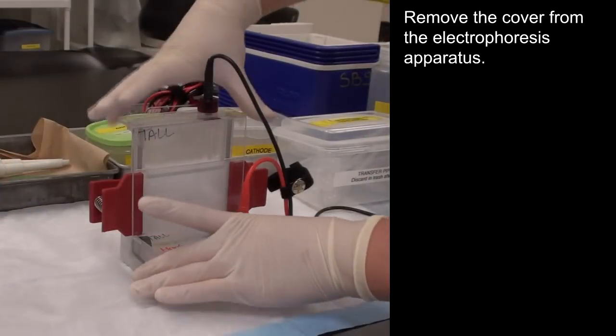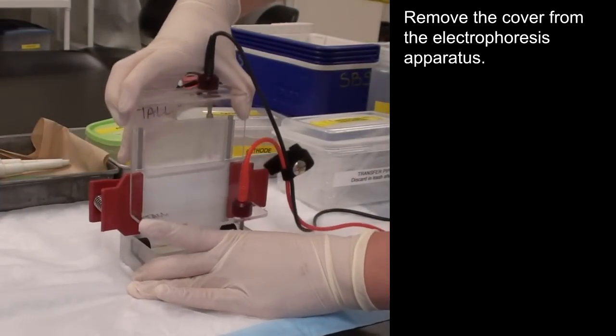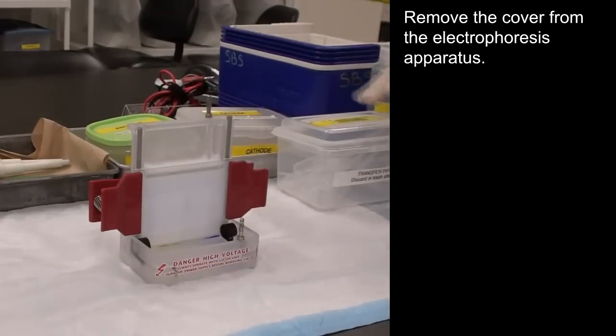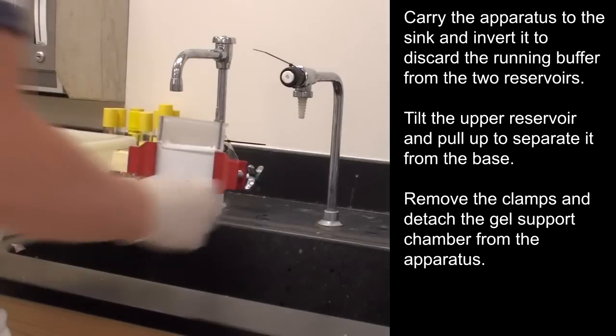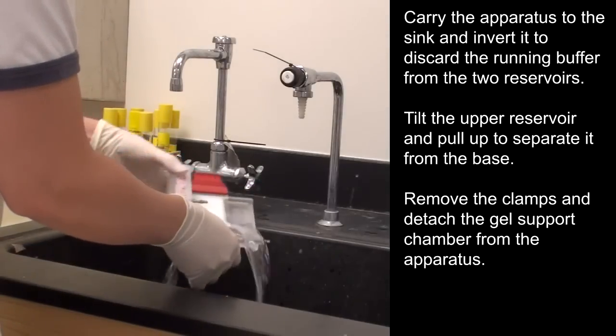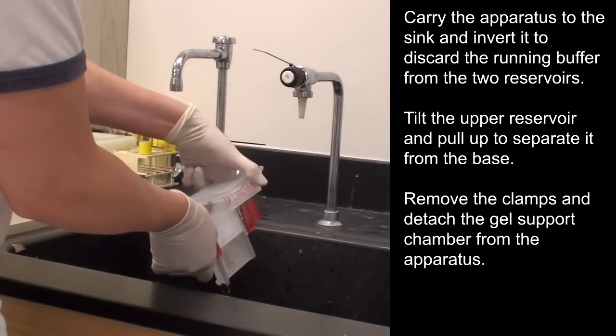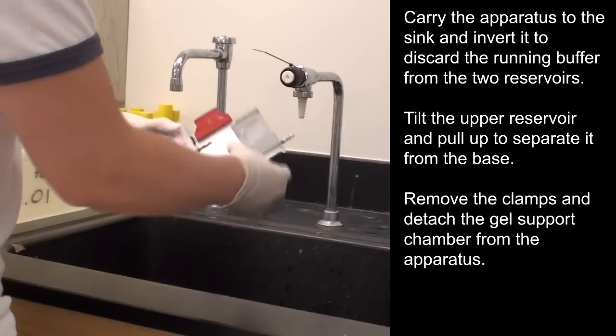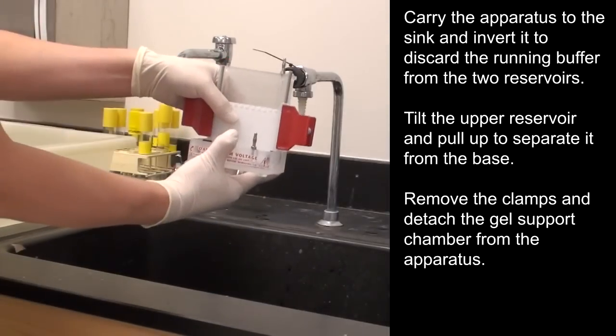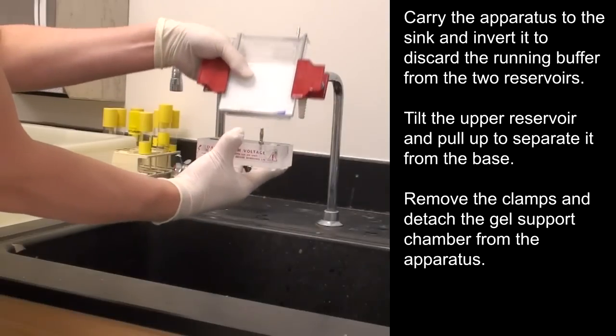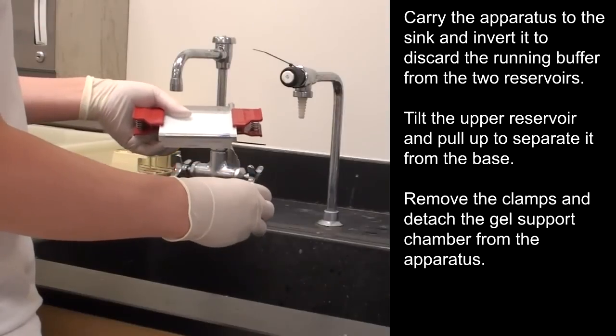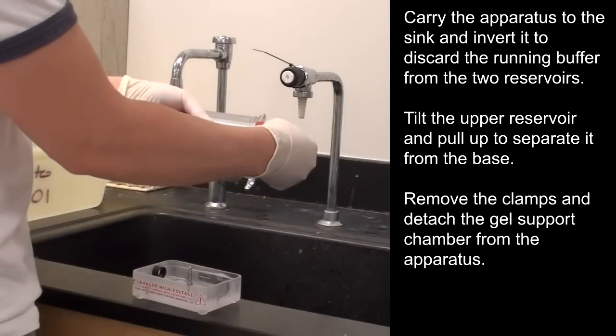Remove the cover from the electrophoresis apparatus. Carry the apparatus to the sink and invert it to discard the running buffer from the two reservoirs. Tilt the upper reservoir back and pull up to separate it from the base. Remove the clamps and detach the gel support chamber from the apparatus.